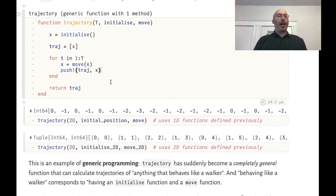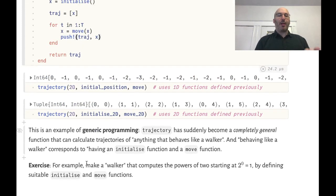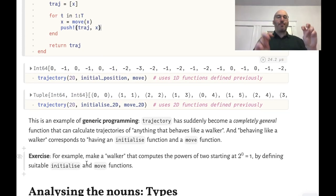So we see that this single version of trajectory can do two very different things depending just on how I write these initialize and move functions. So this is really an example of generic programming. What Julia is doing is actually compiling two completely separate versions of this function trajectory that work in these two separate contexts. And this function trajectory is very general. As an example you can make a kind of walker that computes the powers of two starting at 2^n=1 just by defining suitable initialize and move functions.